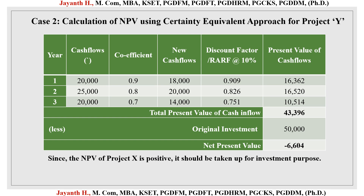Case 2: we have to identify the NPV for project Y. We know year, cash flow, and coefficient. Now we identify the new certain cash flows: 20,000 × 0.9; 25,000 × 0.8; 20,000 × 0.7. We do this to identify the certain cash flows through the help of coefficient values. The discount factor is again 10%, so we can directly take the same values as in Case 1. Multiplying the new cash flows by the discount factor gives us the present value of cash flows for all three years.